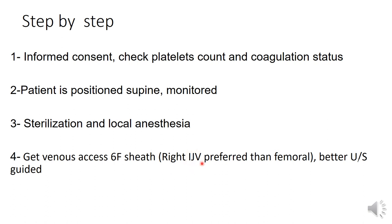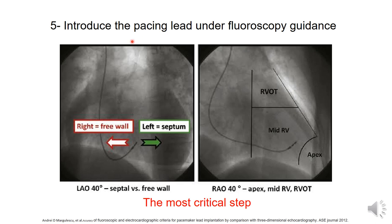For venous access, we usually use a French sheath via the right internal jugular vein, similar to inserting a central line, or less preferably via a femoral approach. The femoral approach may be appropriate in cases like primary PCI with complete heart block. Ultrasound guidance is the safe way to go. The next step is introduction of the pacing lead, with multiple guidance options available.